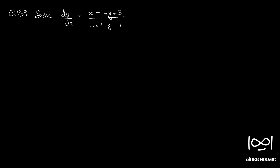Question number 139: dy/dx equal to (x minus 2y plus 5) by (2x plus y minus 1). It is not a homogeneous equation; we have to use substitution to make this into a homogeneous equation.